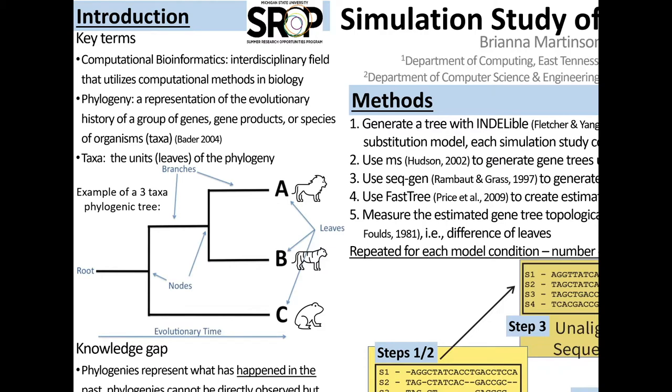One field in particular that benefits from the advances in technology is the field of phylogenetics. Phylogenetics is a representation of the evolutionary history of genes, group of genes, gene products, or species of organism taxa. Taxa is the units or leaves of these phylogenetic trees. This is an example of a phylogenetic tree. It is a 3-taxa phylogenetic tree from the ABC, these leaves.